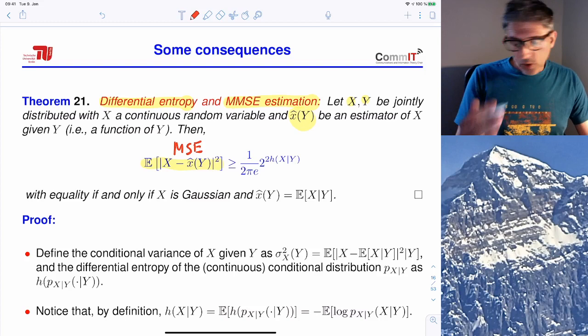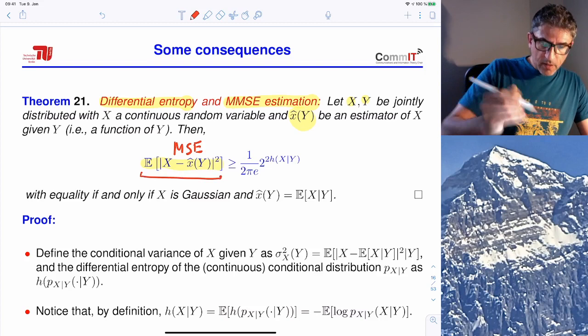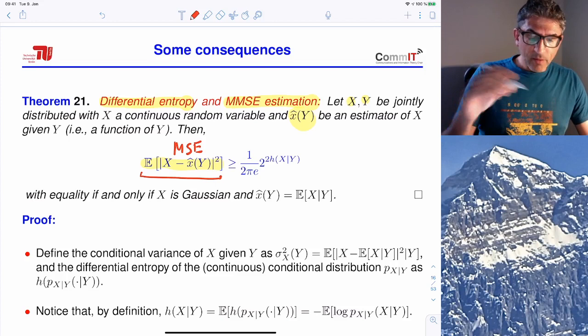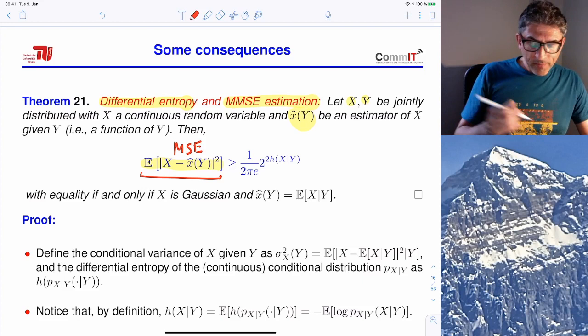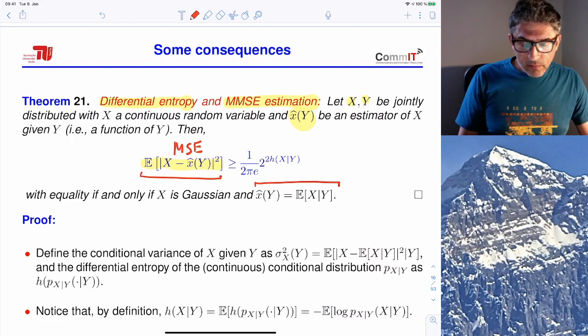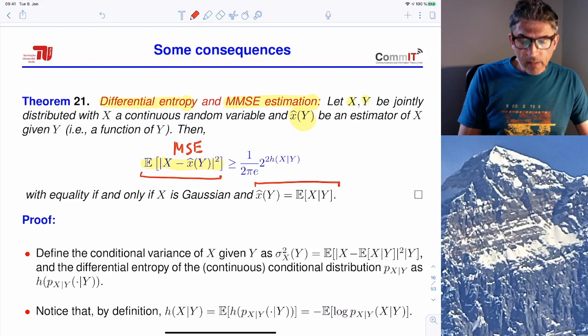The theorem says that for any estimator, including the minimum mean square error estimator, the mean square error is larger than 1 over 2πe times 2 raised to 2 times the conditional differential entropy of X given Y. Equality in this lower bound is obtained only if X is Gaussian and X-hat is the conditional mean, which is in general the minimum mean square error estimator.